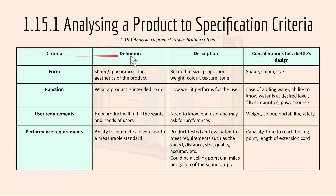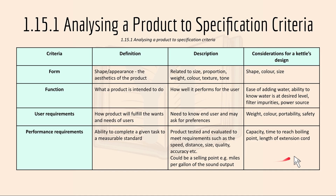Here we have the criteria, the definition, the description, and the considerations for a kettle's design. So all these will be based around a kettle. Form is basically the shape, appearance, or aesthetics of the product, and it's related to the size, proportion, weight, colour, texture, and tone of the product. For a kettle, it could be the shape, the colour, and the size.